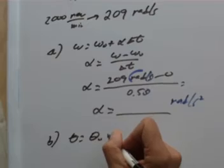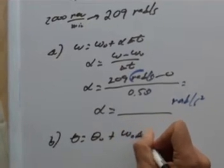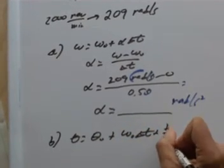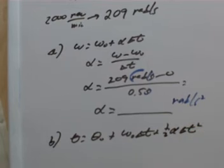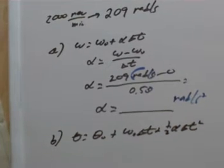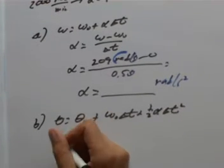We have an equation for that, too. That's equation 1, or the analogous of equation 1 here for linear motion that we have for rotational motion. Theta is theta zero plus omega zero delta t plus a half alpha t squared.